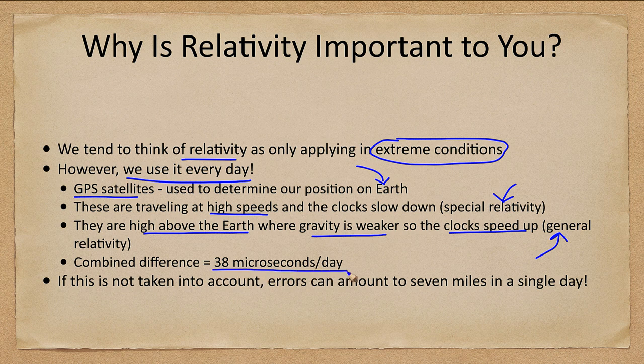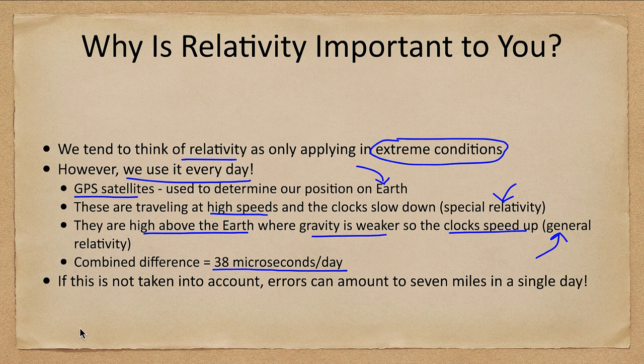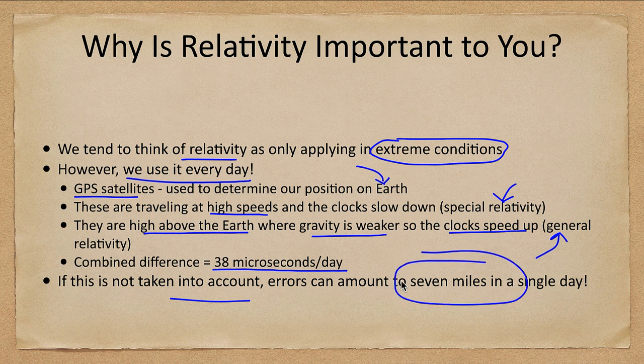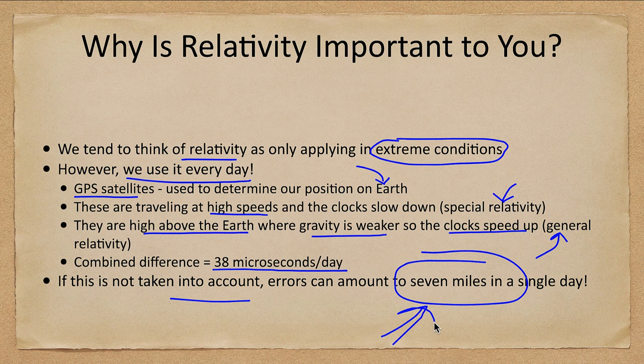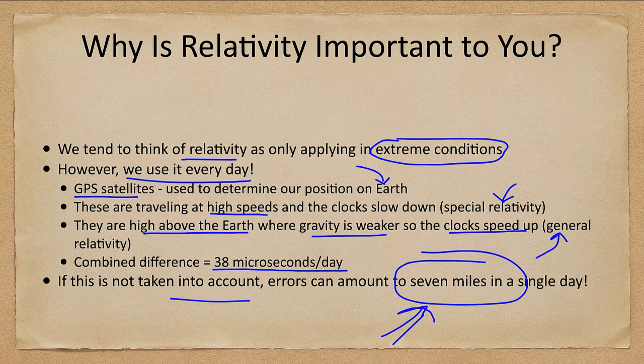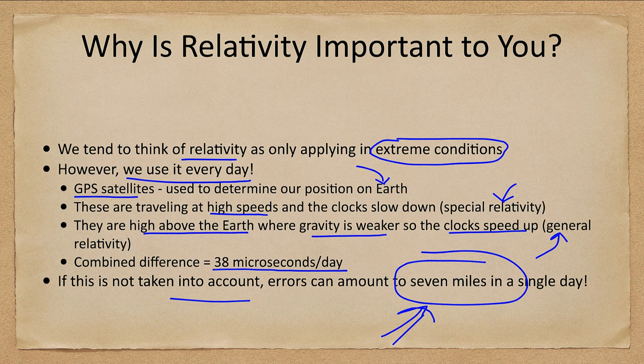So the difference ends up being 38 microseconds per day. Again, it does not sound like a whole lot, but if this is not taken into account, in just one day your GPS would be off by seven miles. And that means you're not going to get to your location if you're depending on your GPS to get you there if the general relativistic and special relativity calculations are not taken into account in using those satellites.